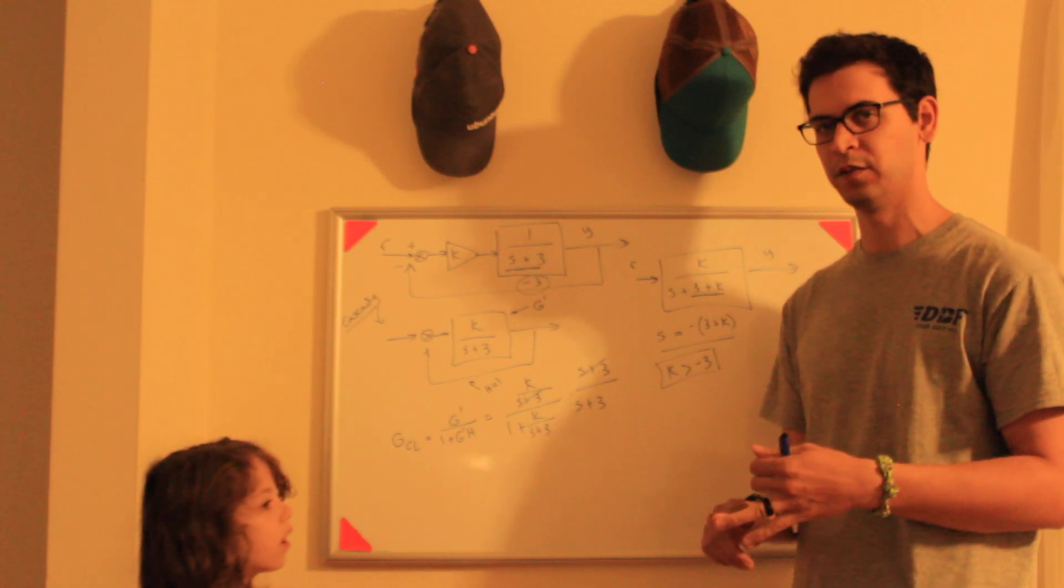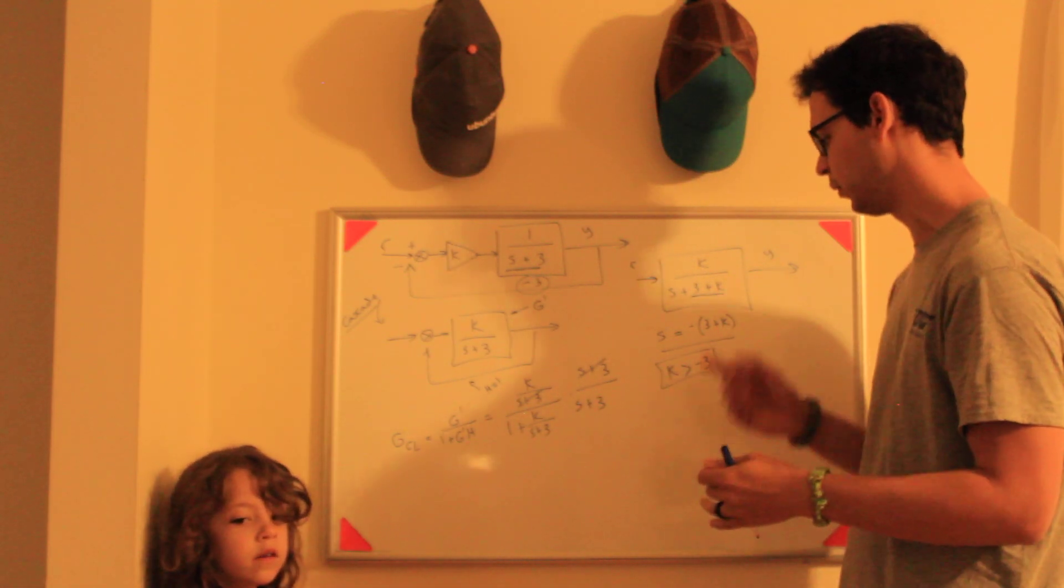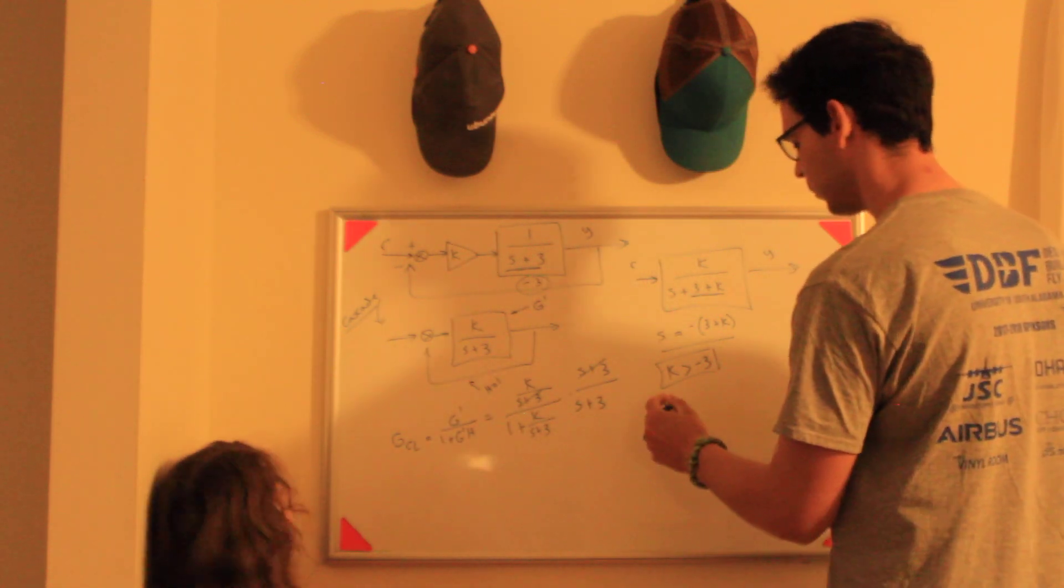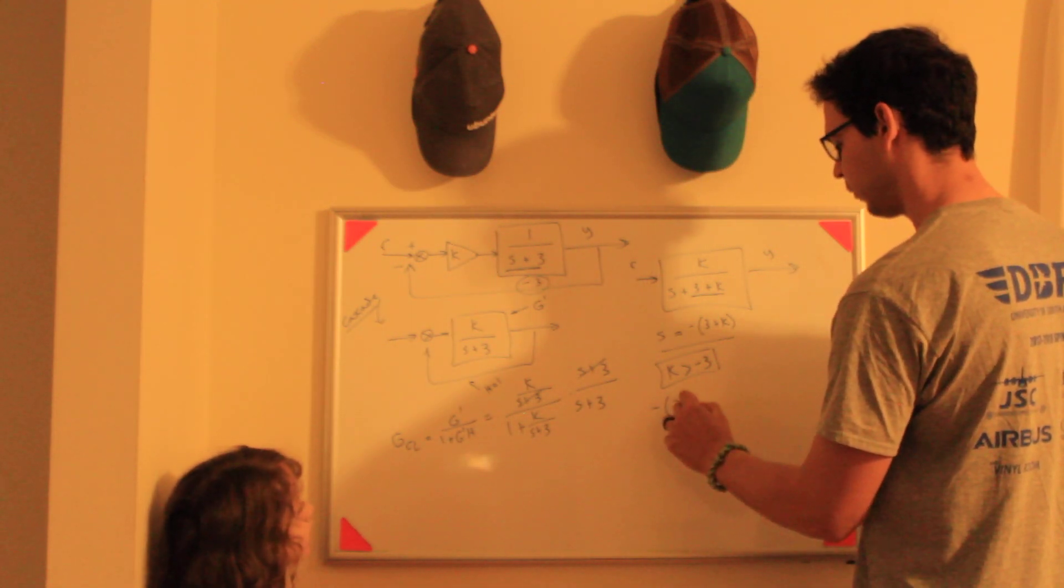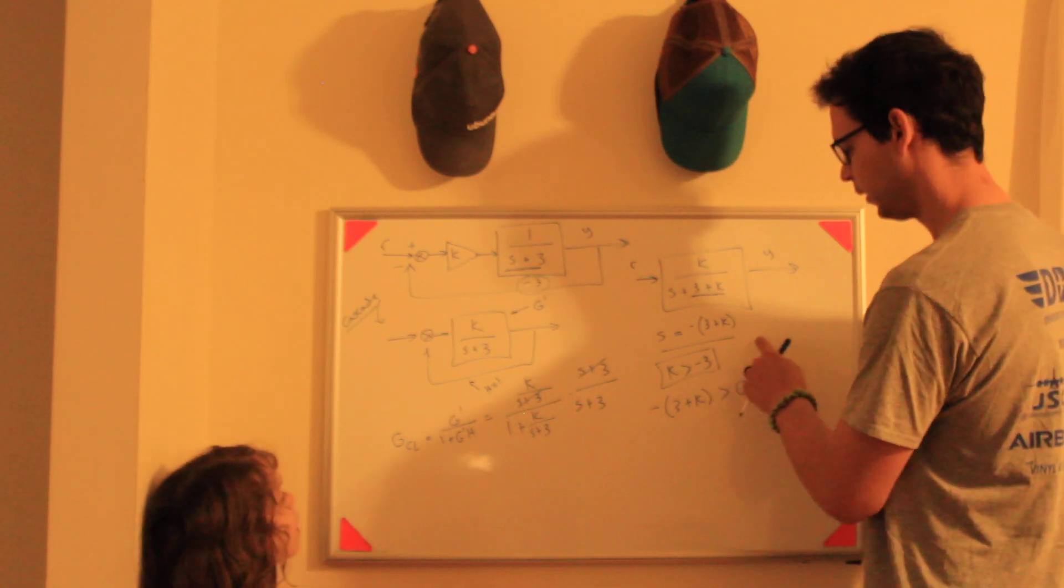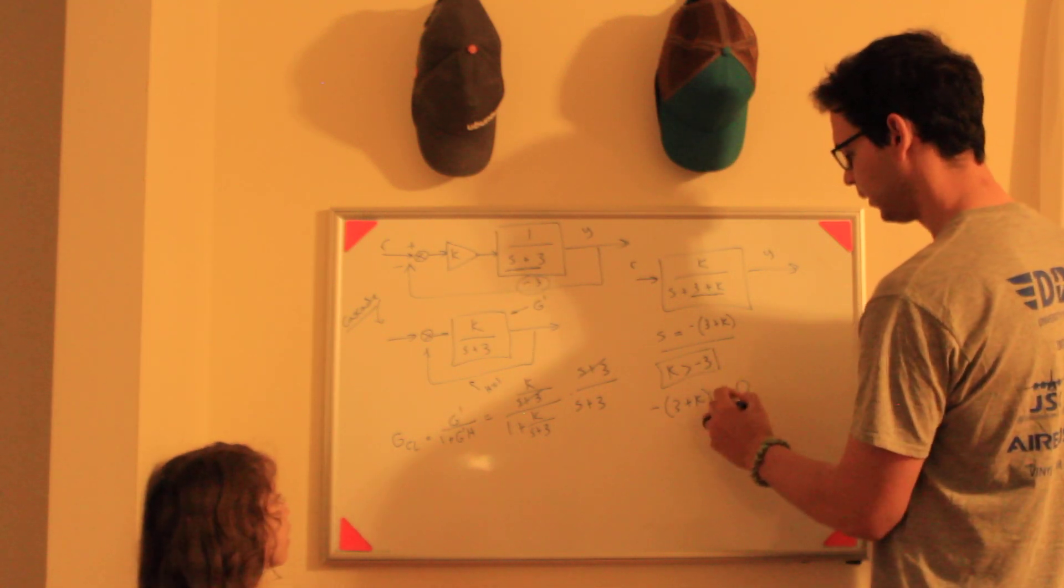Since it's first order, you don't need to do a Routh table or even a root locus. You can just look at the poles and determine the system is stable. If you want to do it more rigorously, you can say negative 3 plus K has to be less than zero because you want this in the left half plane.